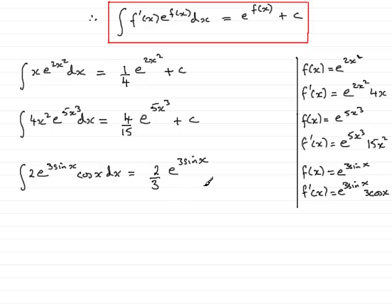2 thirds e to the 3 sine x, then, is this integral, is the result of this integral. Don't forget, again, the plus c.